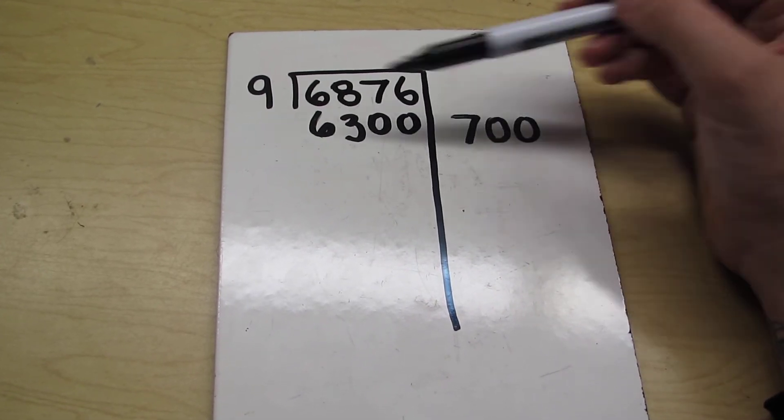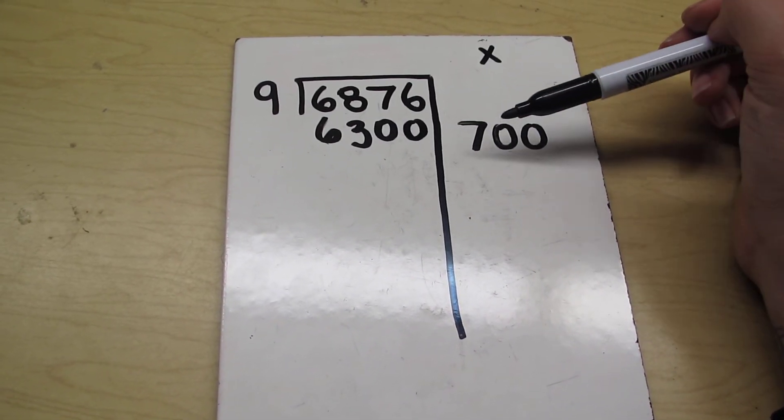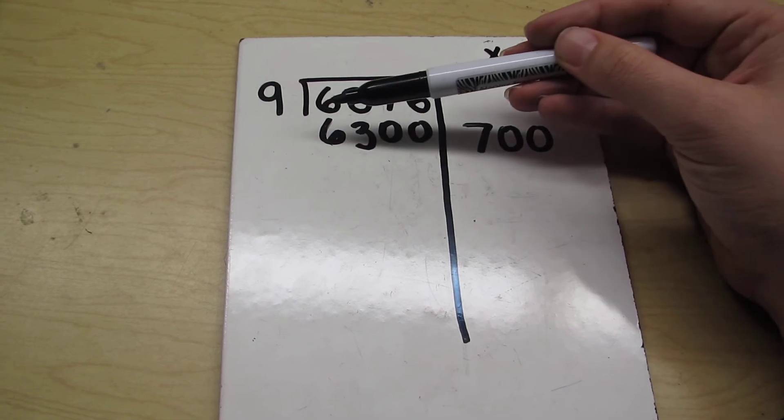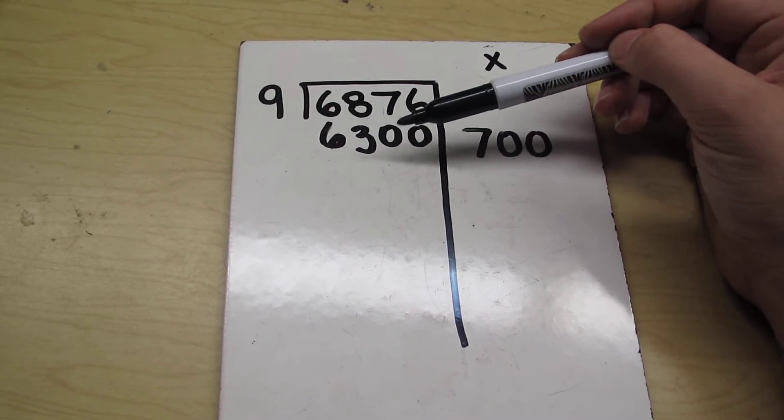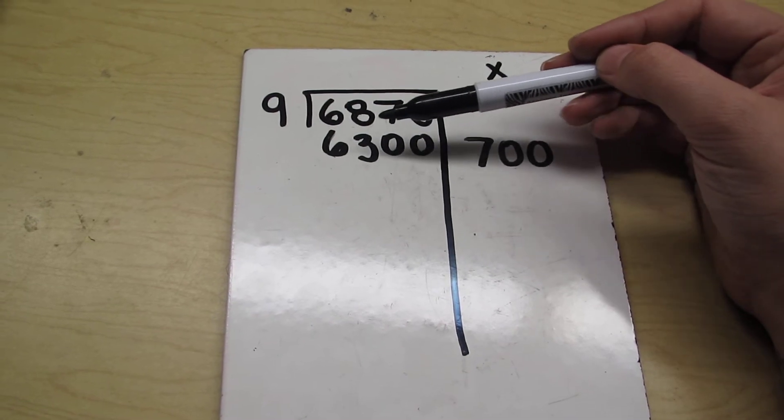Now I don't want to do 9 times 800 because that's going to bring me up to 7,200, and that's going over this number. So I don't want to go over. I want to stay as close as possible without going over.